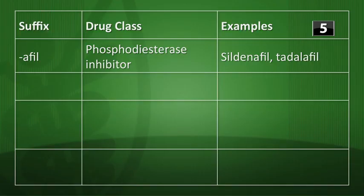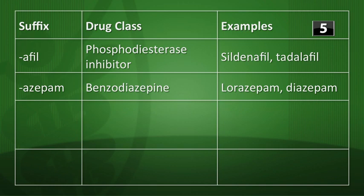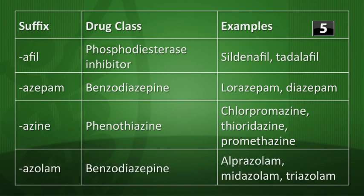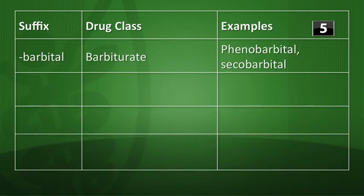The suffix -afil refers to phosphodiesterase inhibitors — the erectile dysfunction drugs. Sildenafil (Viagra) is one example; tadalafil is another. The suffix -azepam refers to benzodiazepines like lorazepam or diazepam. The suffix -azine refers to phenothiazines — some used as neuroleptics like chlorpromazine or thioridazine, others as anti-emetics like promethazine. The suffix -azolam is also a benzodiazepine suffix: alprazolam, midazolam, triazolam.